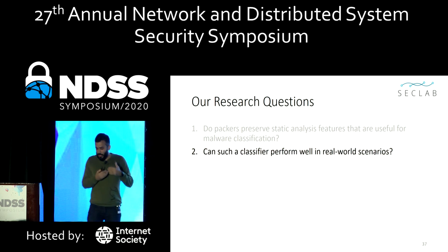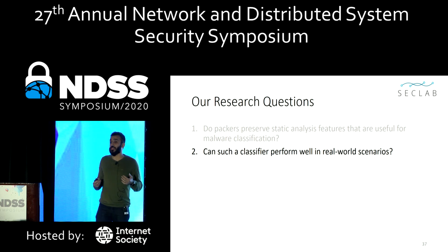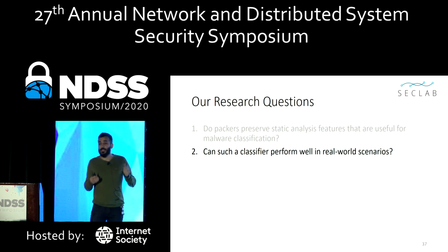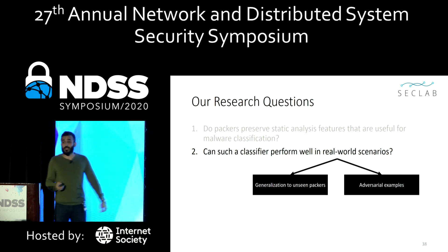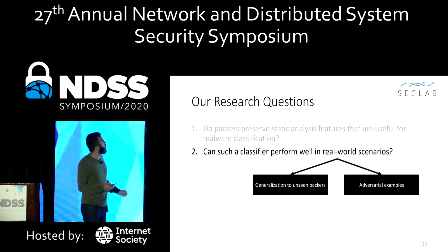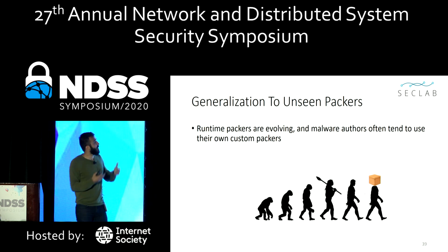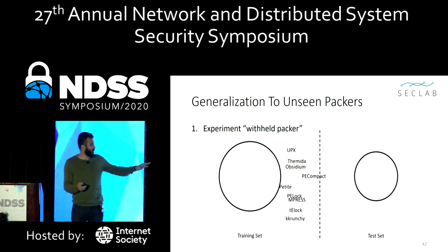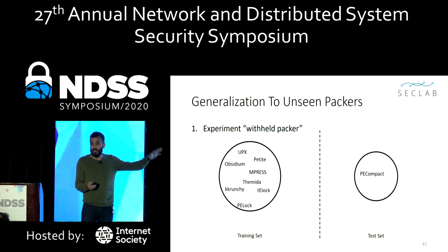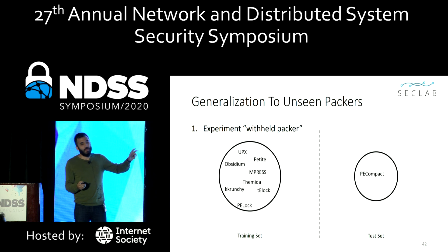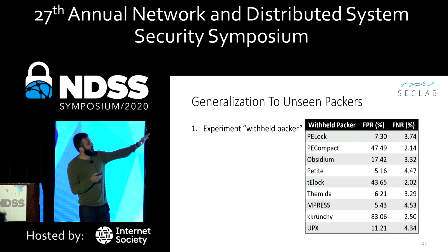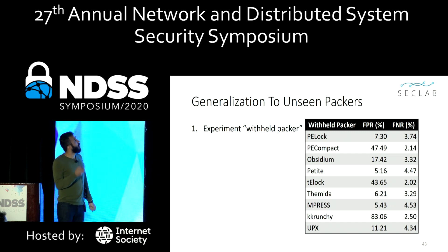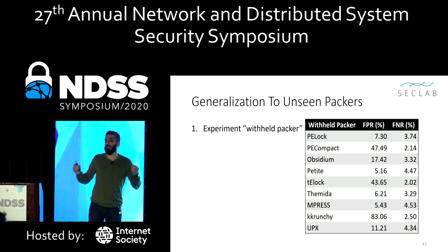Consider that I just showed you can distinguish between packed benign and packed malicious samples over your training set. But will such a classifier perform well in real-world scenarios? By real-world, I mean generalization to unseen packers and adversarial examples. Generalization to unseen packers matters because we have runtime packers that are evolving, and malware authors often tend to use their own customized packers. In this experiment, we excluded one packer from the training set — here, PCompact — trained the classifier on samples packed with the other eight packers in the lab dataset, and evaluated it on samples packed with PCompact. We observed a very high error rate for PCompact and some other packers when they are withheld, like tElock, KCrunch, and so forth. We clearly have some lack of transferability for some packers.